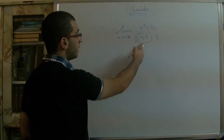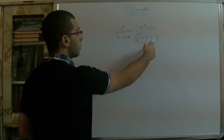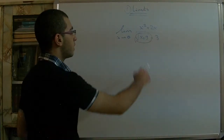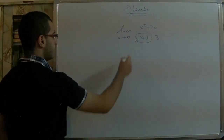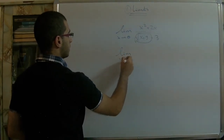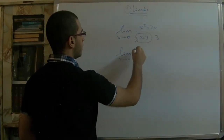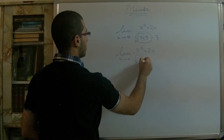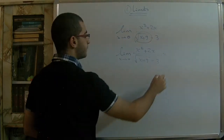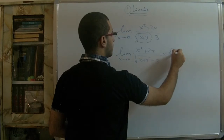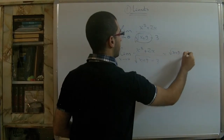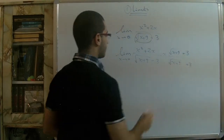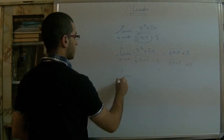If we substitute x = 0 directly, we get 3 − 3 = 0 in the denominator, so we must multiply the function by the conjugate of the denominator. We write: limit as x approaches 0 of (x² + 2x) over (√(x + 9) − 3) multiplied by (√(x + 9) + 3) over (√(x + 9) + 3).